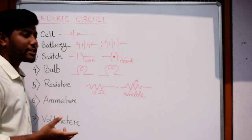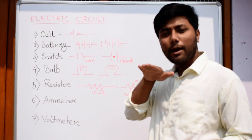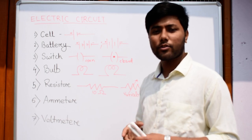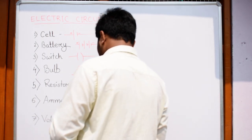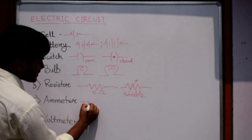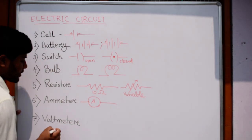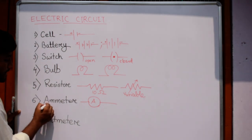Now ammeter. What is an ammeter? Ammeter is a device which we use to calculate the amount of current flowing through the circuit.